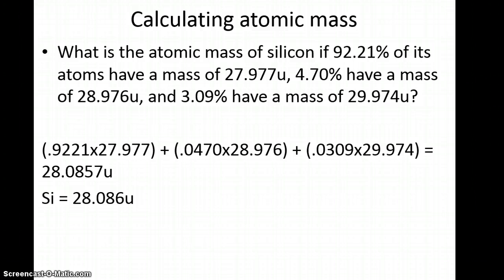To solve this, convert the percents to decimals. Calculate (0.9221×27.977) + (0.0470×28.976) + (0.0309×29.974) = 28.0857u. The atomic mass for silicon is 28.086u, the average of all those isotopes.